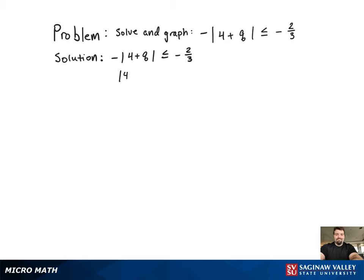For this absolute value inequality problem, the first thing we're going to want to do is solve for the absolute value. Divide by negative 1 as the first step, and don't forget to flip the inequality symbol.